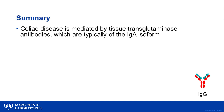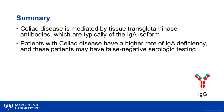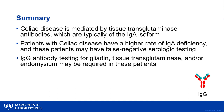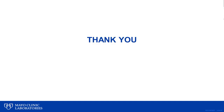In summary, celiac disease is mediated by tissue transglutaminase antibodies, typically of the IgA isoform. However, patients with celiac disease are at higher risk of having IgA deficiency, and in this setting, IgA-based testing is often negative, complicating the clinical picture. In that situation, we recommend IgG antibody testing either against gliadin, tissue transglutaminase, or endomysium to establish the diagnosis of celiac disease. Thank you very much for your attention.